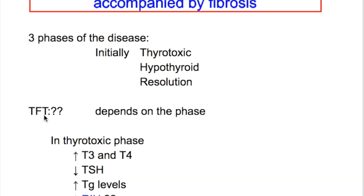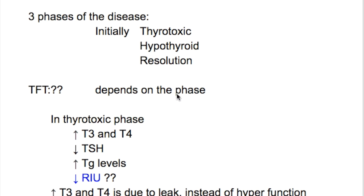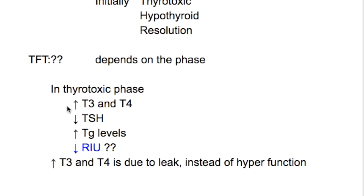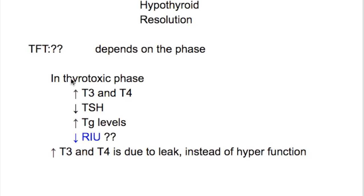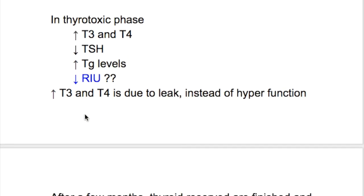Thyroid function depends on the phase of the disease. In the thyrotoxic phase, there is increased unbound T4 and T3, decreased TSH, increased thyroglobulin levels, and decreased radioiodine uptake. Radioiodine uptake is decreased despite thyrotoxicosis because the thyrotoxicosis is due to leakage from the follicle, not due to hyperfunction of the thyroid gland. The condition damages follicles, causing release of unbound T4 into the circulation along with thyroglobulin.